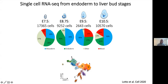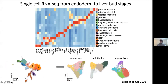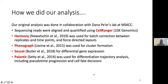We did the usual: put all the cells together, clustered them, and identified our clusters based on marker genes. Since that was a little overwhelming, we actually separated into three separate groups: mesenchymal clusters, endothelial clusters, and the hepatoblast clusters. I'm going to first talk about the endothelial clusters quickly, just to give you an idea of how we actually approach our questions.